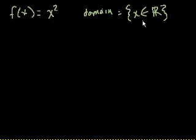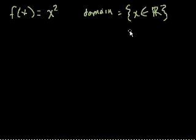This is just a fancy way of saying that this R with a double backbone means real numbers. Real numbers are every number outside of complex numbers — including irrational numbers, transcendental numbers, and fractions. So the domain here is x, where x just has to be a member of the real numbers. This little backwards-looking e means x is a member of the real numbers.